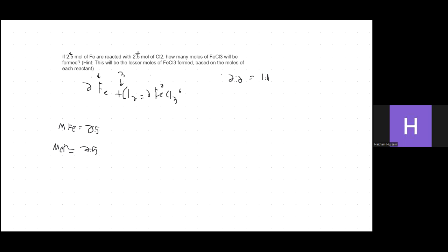The hint about 'lesser moles' is there, but you have to know that if you're given the same number of moles and the ratio is 1:1 — or 2:2, same number either way — there is no limiting reactant. There would be no excess iron or chlorine, and there is no math involved.